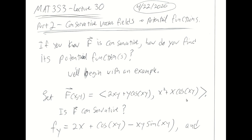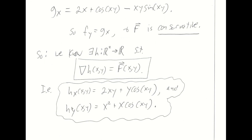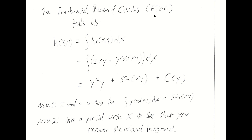The two component functions of big F hat are the two first partials of little h. This is its partial with respect to x, and this is its partial with respect to y. I want to find h. I have h's partial with respect to x and its partial with respect to y. The Fundamental Theorem of Calculus — which I'll generally abbreviate as FTOC — tells us that if you have a derivative and you integrate that derivative with respect to the same variable, you recover the original function. Integrals are anti-derivatives; they undo derivatives.